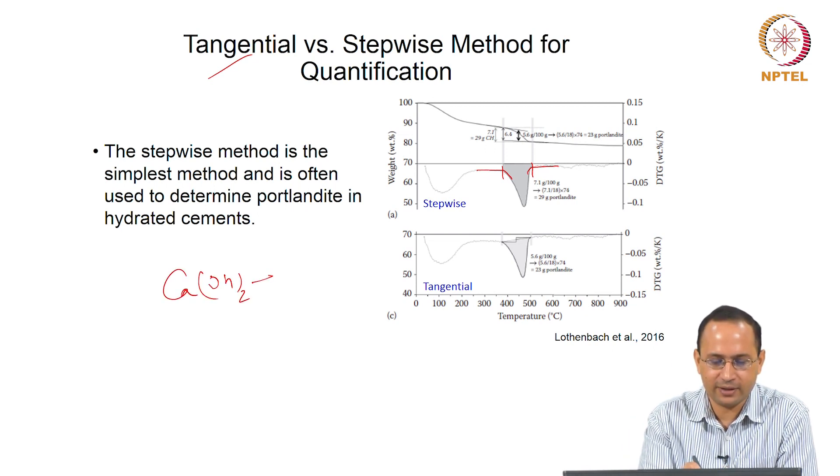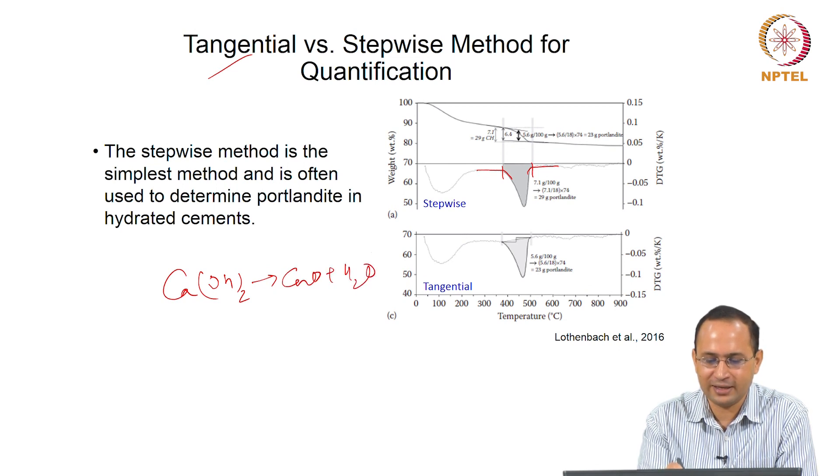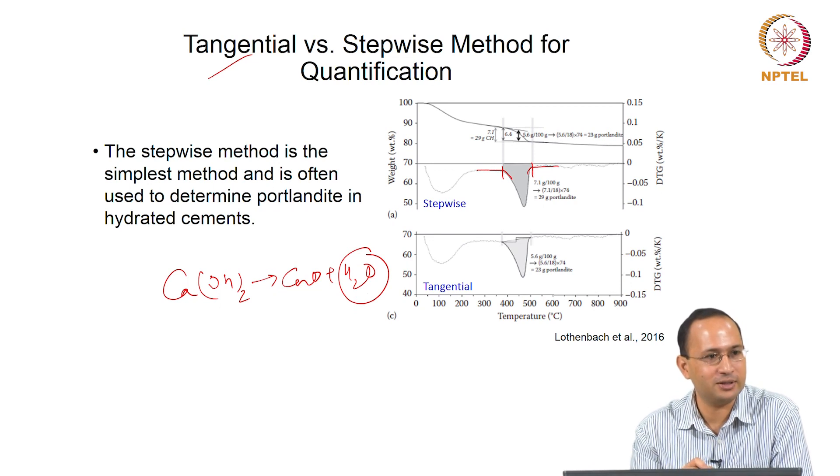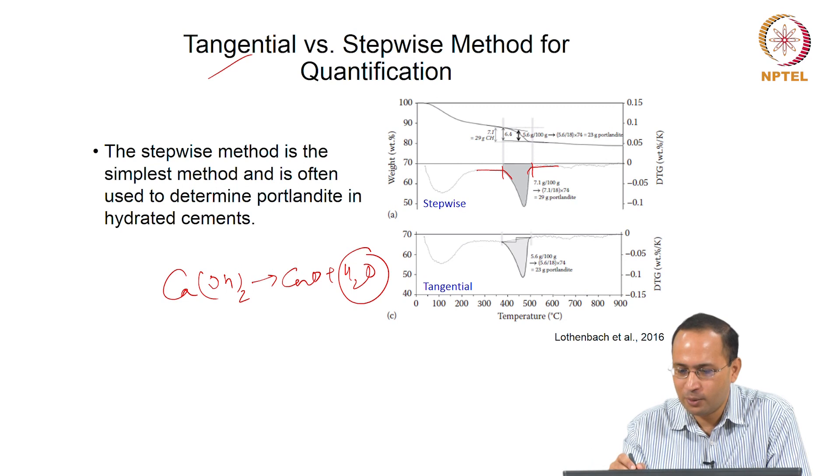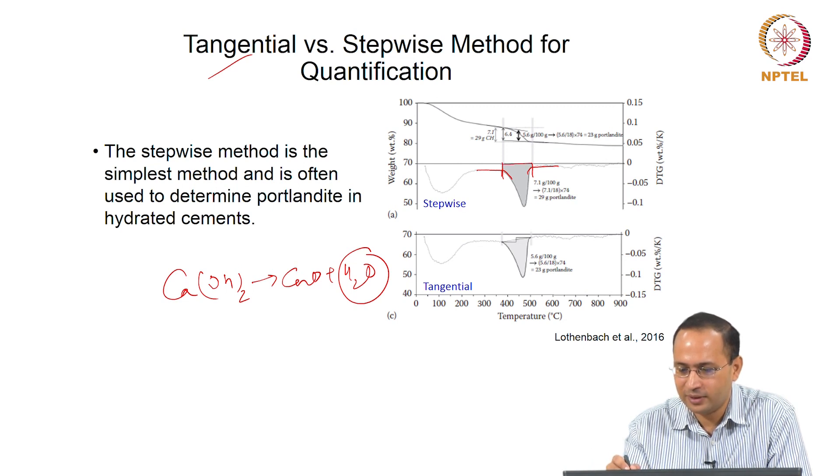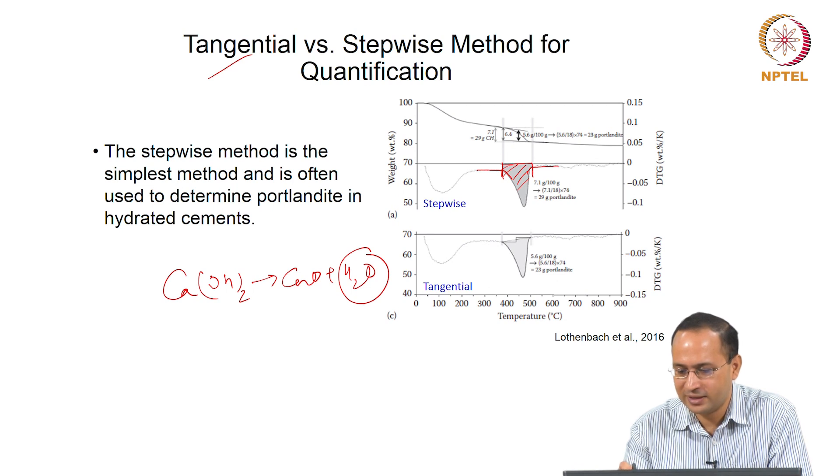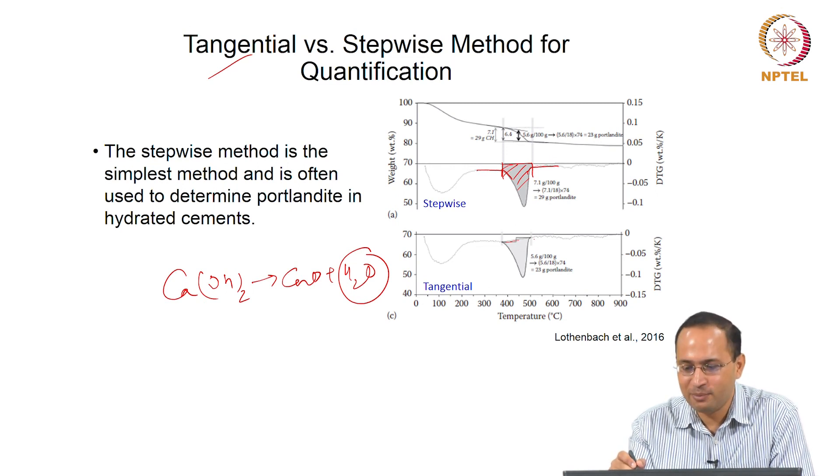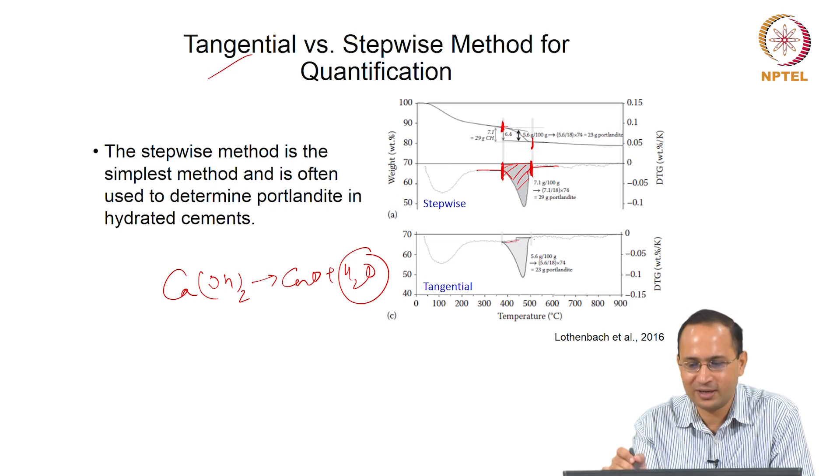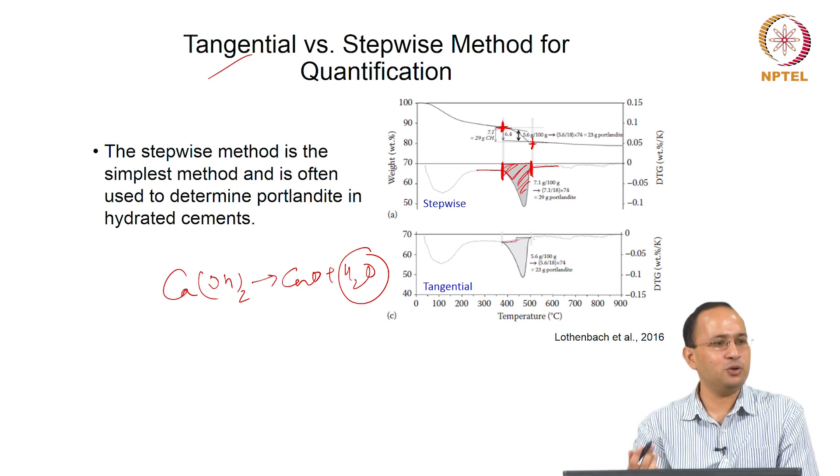So how do you quantify? We want to quantify how much water is lost, then use that information to calculate the amount of calcium hydroxide. One way is stepwise. Stepwise means you just take this area. You plot DTG - this whole area. Tangential is you plot the tangent here, plot tangent here, then take this area. Stepwise means you directly measure the weight loss. You know where the slope changes from DTG. The slope does not change beyond this point. You know this is the weight loss curve - you can identify what is the weight loss. That will give you the area.